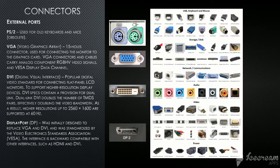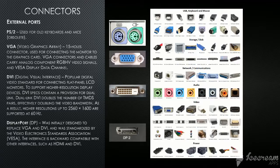Next we have DVI, or Digital Visual Interface ports. This is a popular digital video standard for connecting flat panel LCD monitors. To support higher resolution display devices, DVI specs contain a provision for dual link. Dual link DVI doubles the number of TMDS pairs, effectively doubling the video bandwidth. As a result, higher resolutions up to 2560×1600 are supported at 60 Hz.